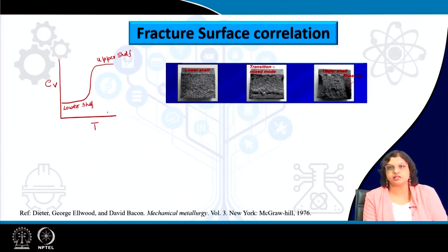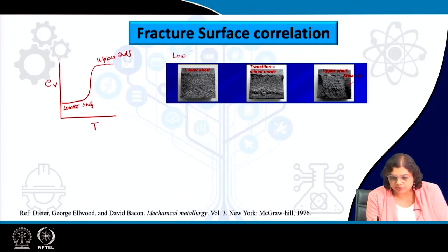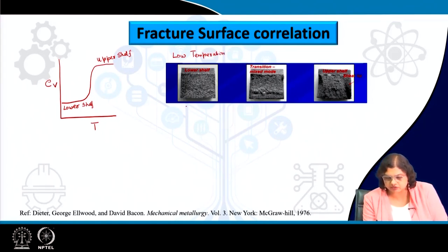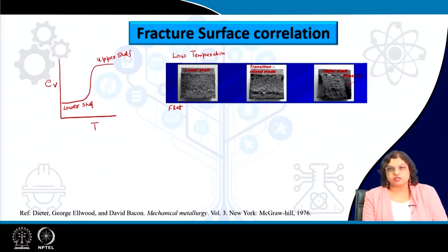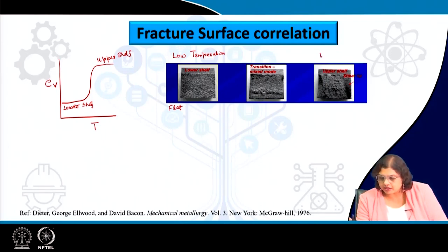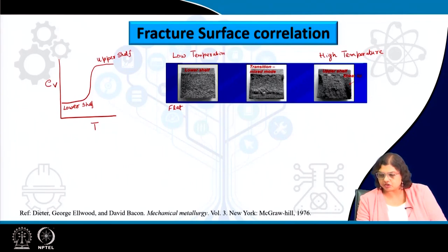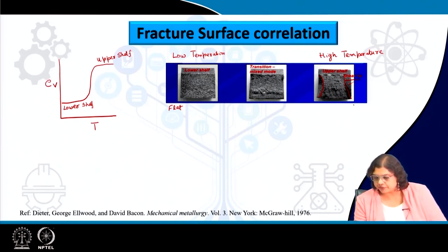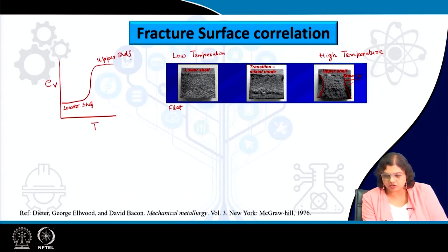Looking at the broken specimens: when tested at low temperature (lower shelf), we see a perfectly flat fracture surface — just by looking at the fracture surface we can determine brittle mode of failure. On the other hand, when tested at higher temperature (upper shelf), in some cases there has been no complete failure at all, or there is a typical signature of shear lip — a change in direction near the edges — signifying ductile fracture.